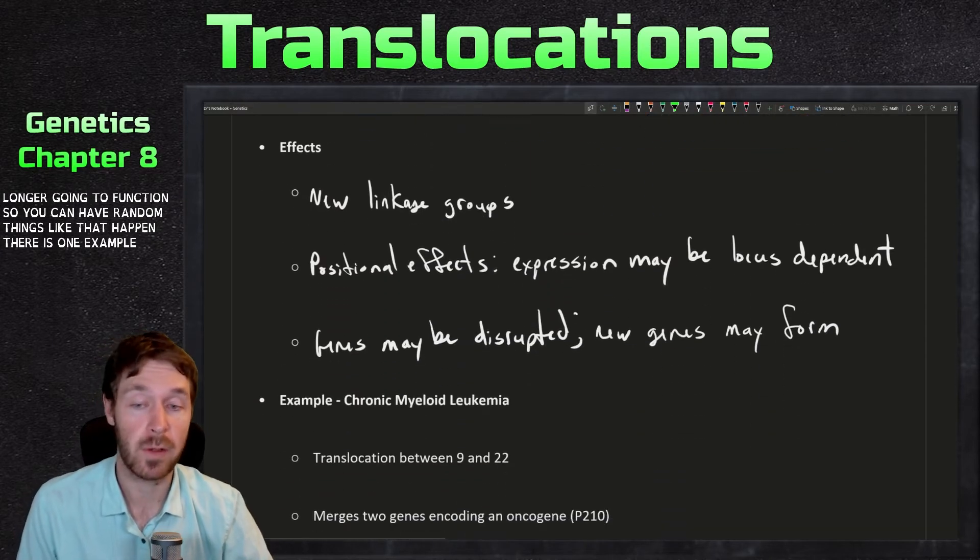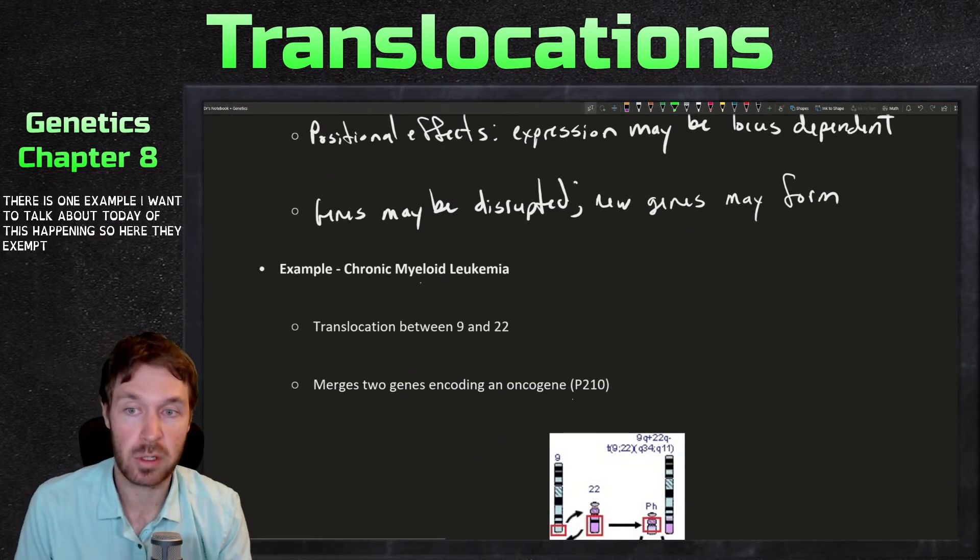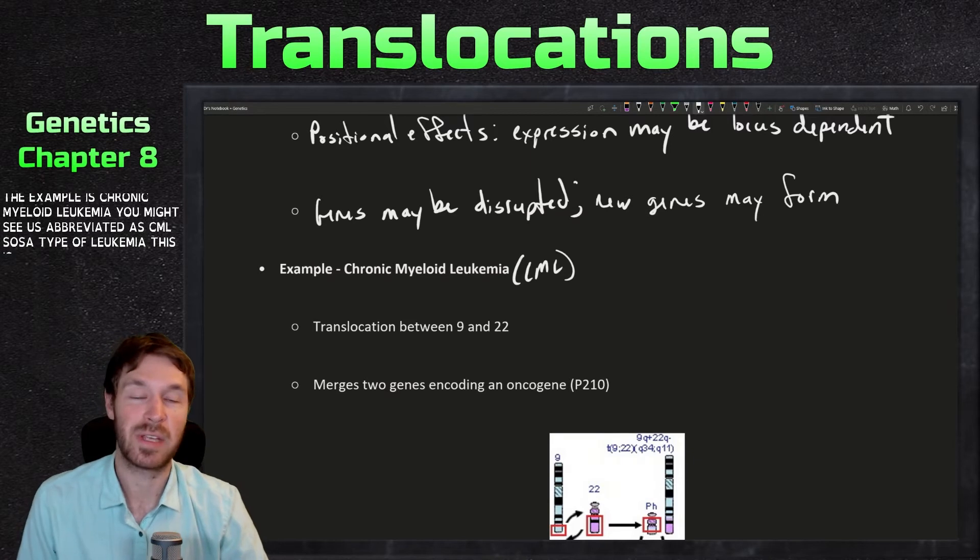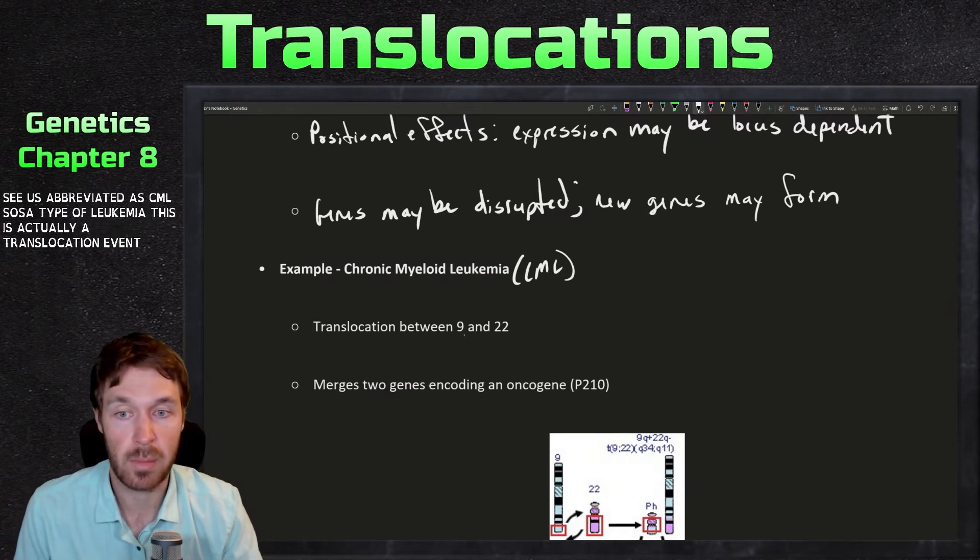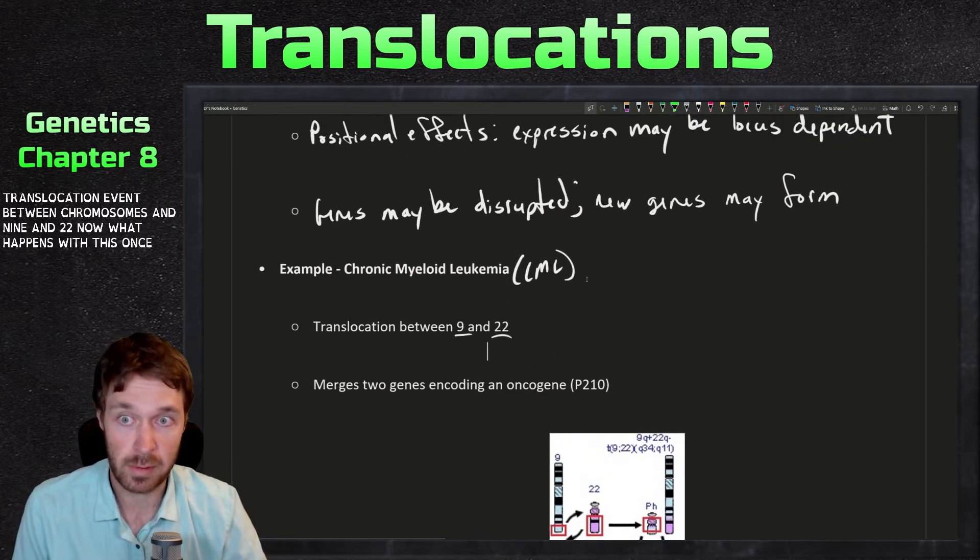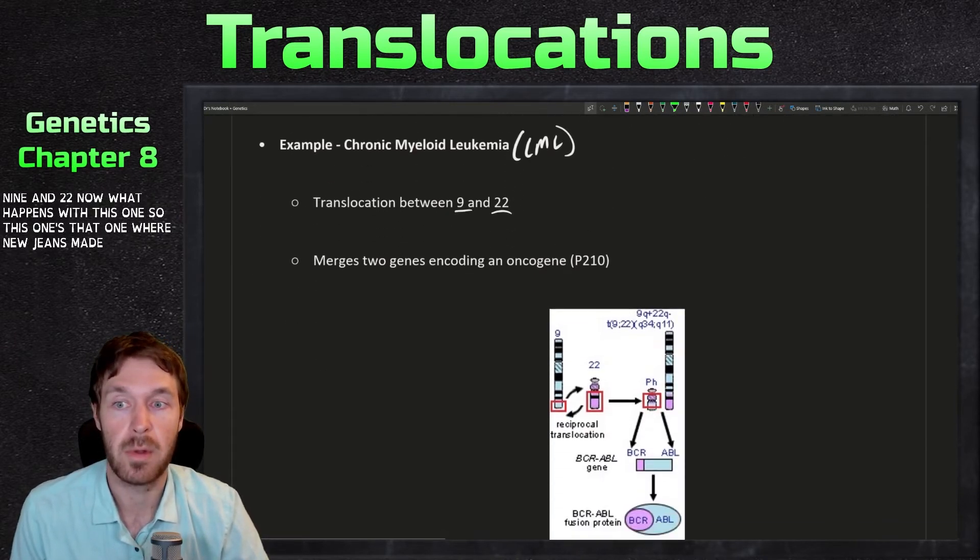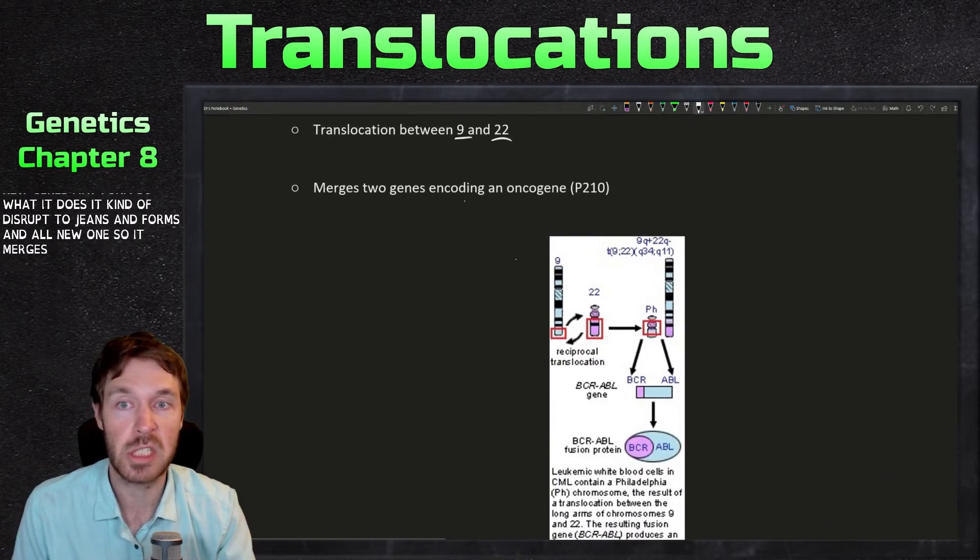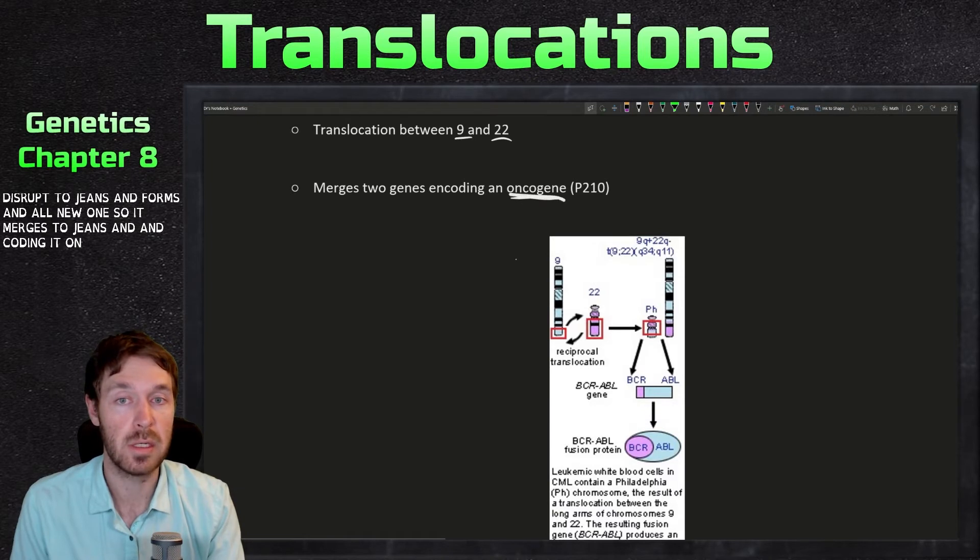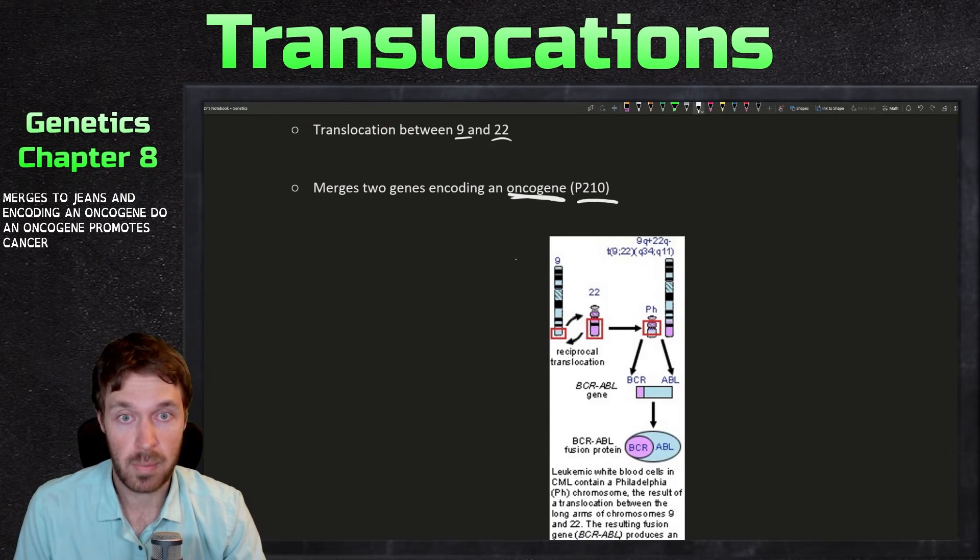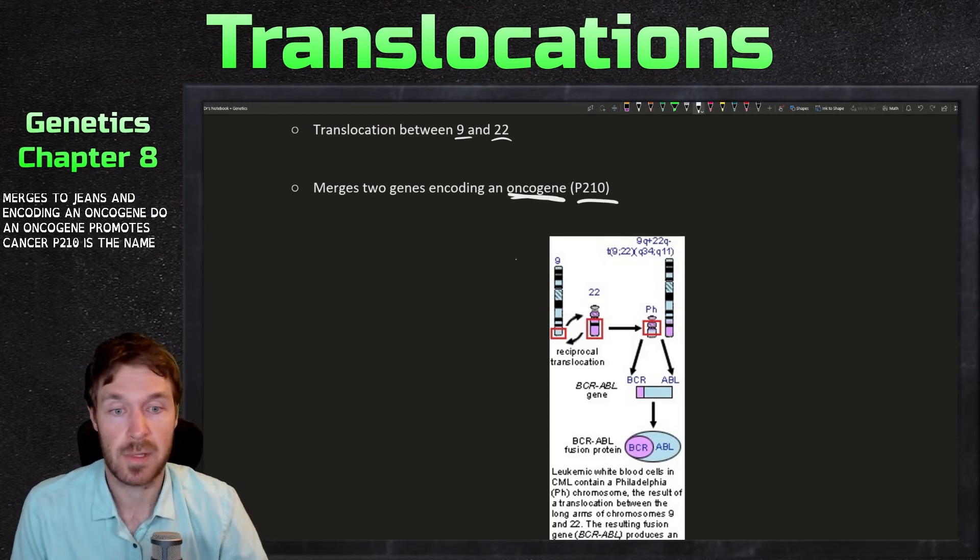There is one example I want to talk about today of this happening. So here the example is chronic myeloid leukemia. You might see it's abbreviated as CML. So it's a type of leukemia. This is actually a translocation event between chromosomes 9 and 22. Now what happens with this one, so this one's the one where new genes may form. So what it does is it kind of disrupts two genes and forms an all new one. So it merges two genes encoding an oncogene. So an oncogene promotes cancer. P210 is the name of that specific gene.